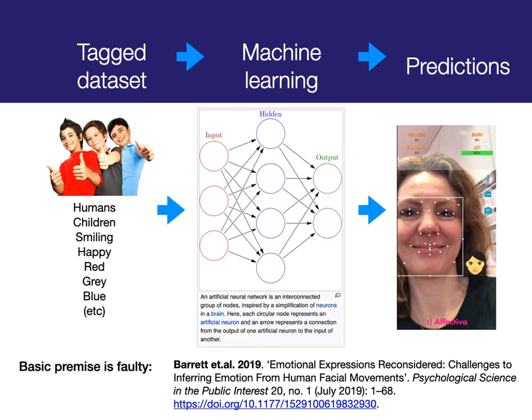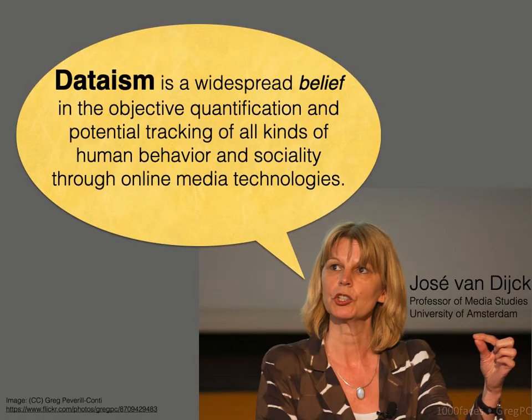There's no such thing as raw data — all data is situated and created. That's something to think about when considering what data sets we are using. Facial expressions are proxies for emotion; they're not the emotion itself. Dataism is this almost ideological belief that if you have data and are objectively quantifying things, you can predict anything — and that's power. This belief in dataism often sets us off on the wrong track, like emotion recognition scholars selling a system that is not based on scientific research or on what we actually know about emotion.